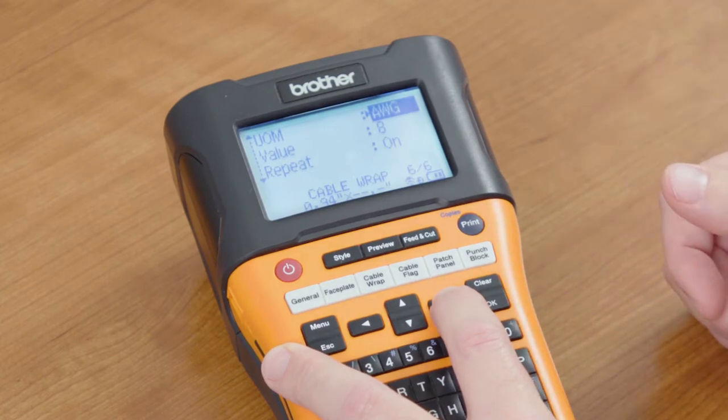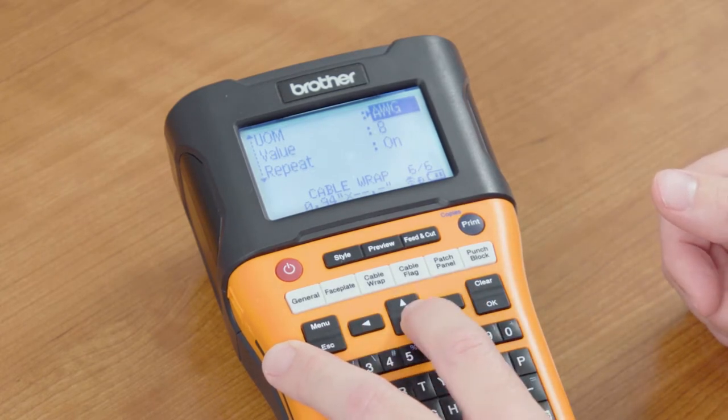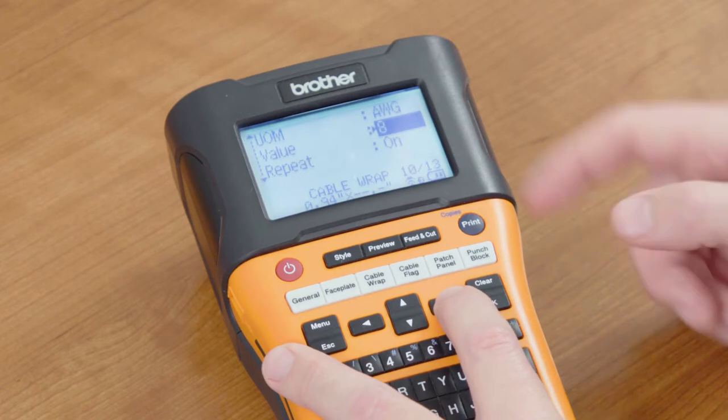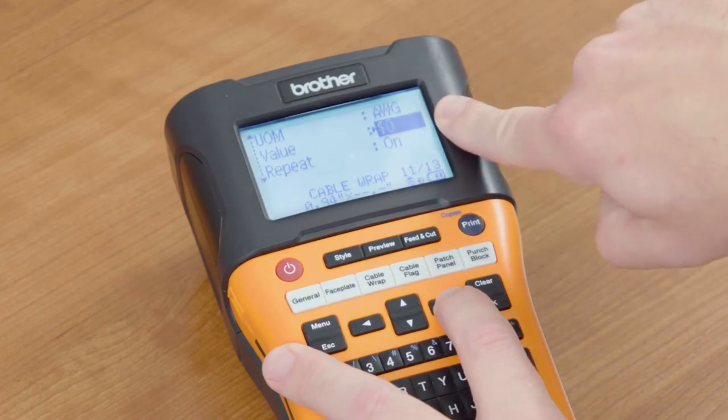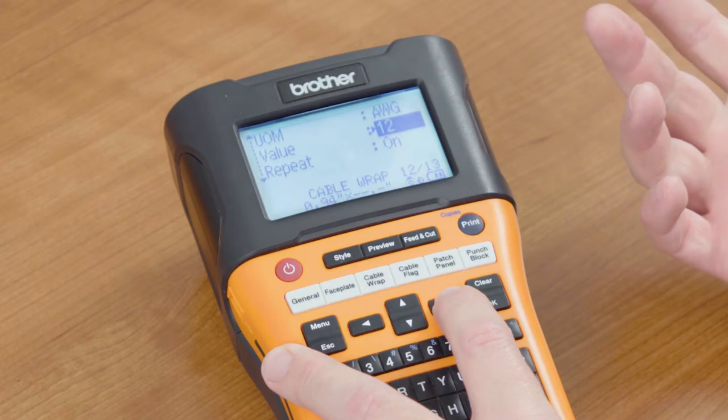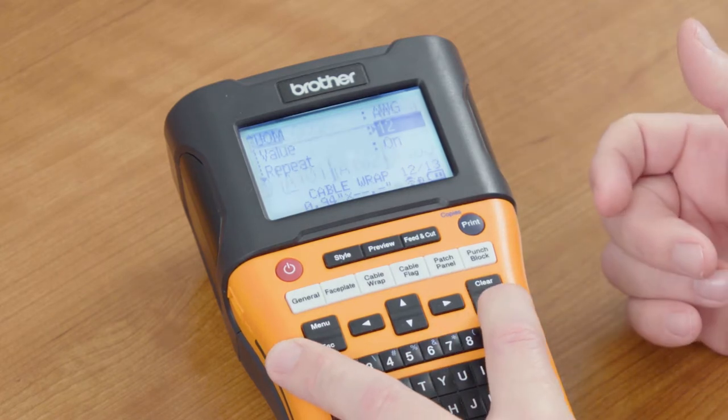For this example, let's do an AWG. Using your left and right arrows, your down arrows, you can select what type of AWG cable that you want. For this example, I'll go ahead and select 12 gauge AWG and select OK.